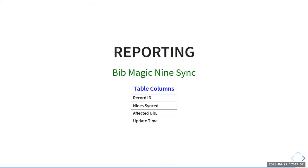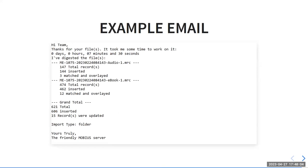There's also a nine sync table that keeps track of when you sync the nines — the affected URLs and the nines synced. And here's an example email it fires off. No frills: 'Hi team, thanks for your files. It took zero days, zero hours, seven minutes, three seconds. File number one had 147 total records — 144 inserted, three matched and overlaid. File number two, ebook one, had 474 total records — 462 inserted, 12 matched and overlaid. Grand total, import type was a folder import.' This is somebody dropping files into a folder, the cron sweeps them up, imports them, and gives you the report.